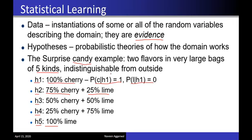One bag is given to you and you are supposed to take out one candy. Based on looking at the candy, can we guess the bag? For example, if it comes out to be a lime candy, what could our guess be? This is the kind of problem addressed in statistical learning. We keep on taking one candy at a time and try to build our hypothesis about which bag we have.